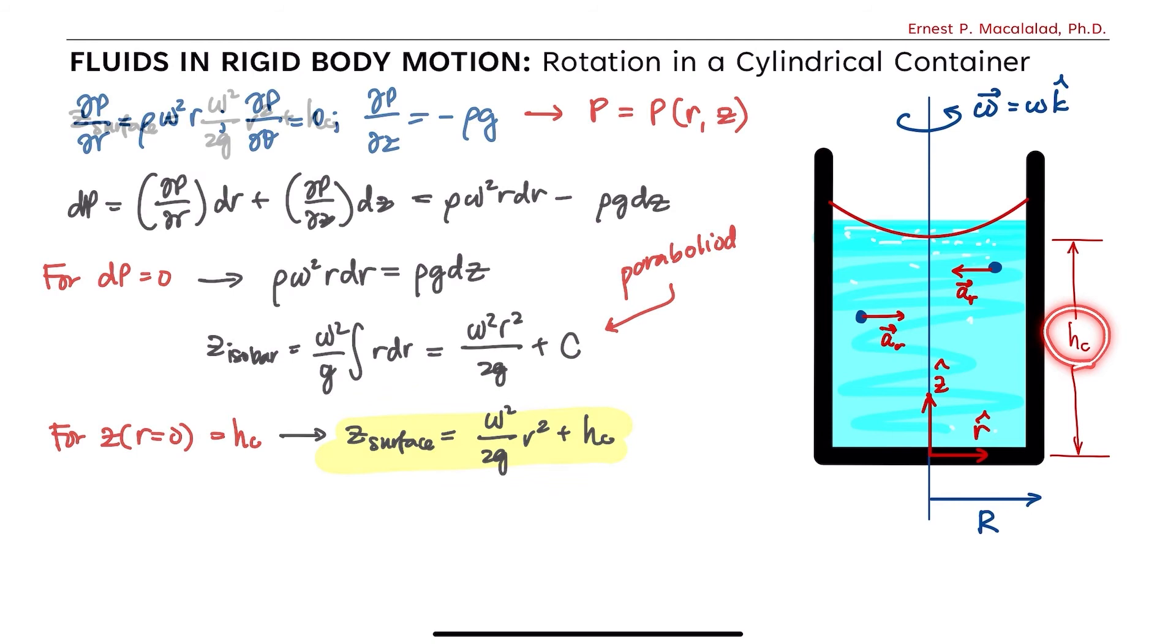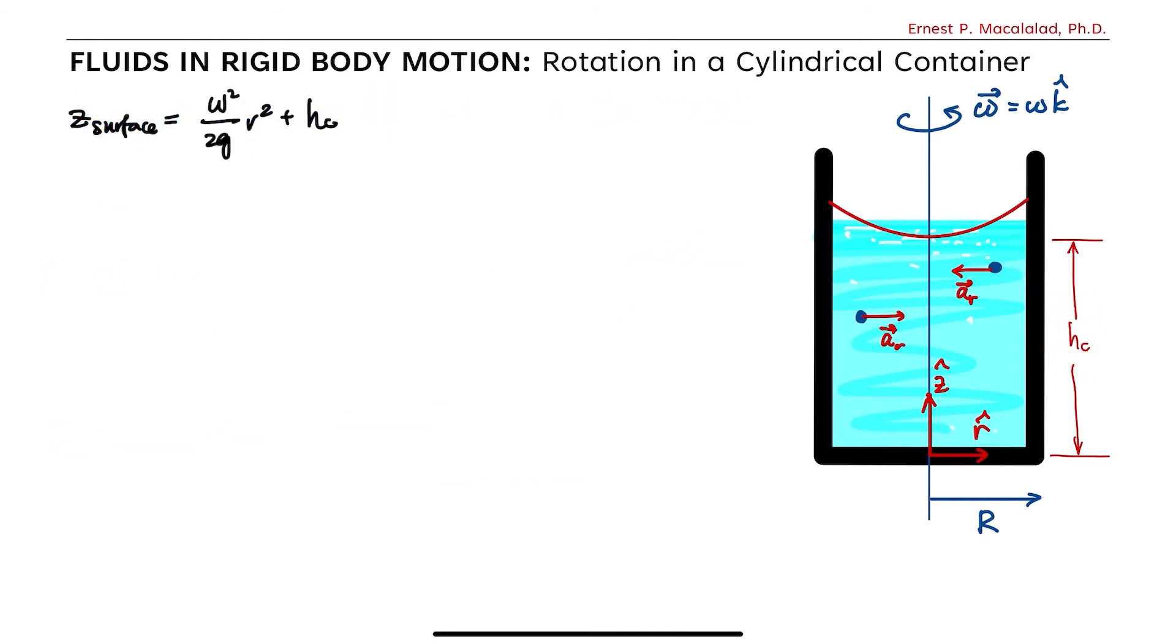Now this time, let's solve for hc. So to solve for hc in terms of the height of the fluid when it is not rotating h0, we first obtain the volume of the fluid originally before it starts to rotate. So when the container is not rotating, the volume of the fluid is given v equals pi r squared h0.